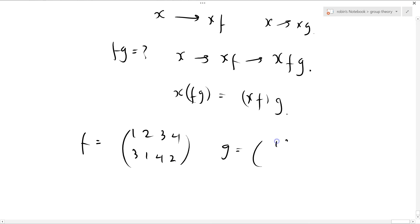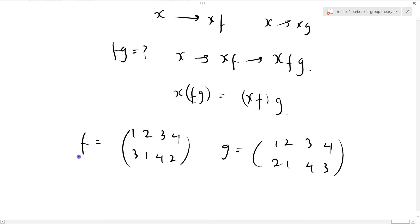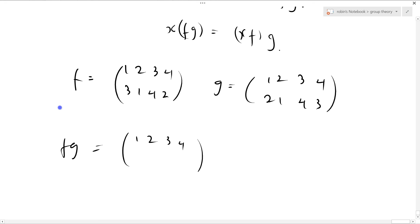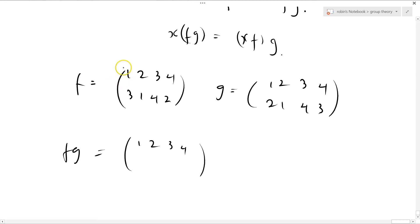And g equals 2, 1, 4, 3. Let's just have a look at that. And what's fg? 1, 2, 3, 4. We see this is why we can do it, because we do f first and then g.